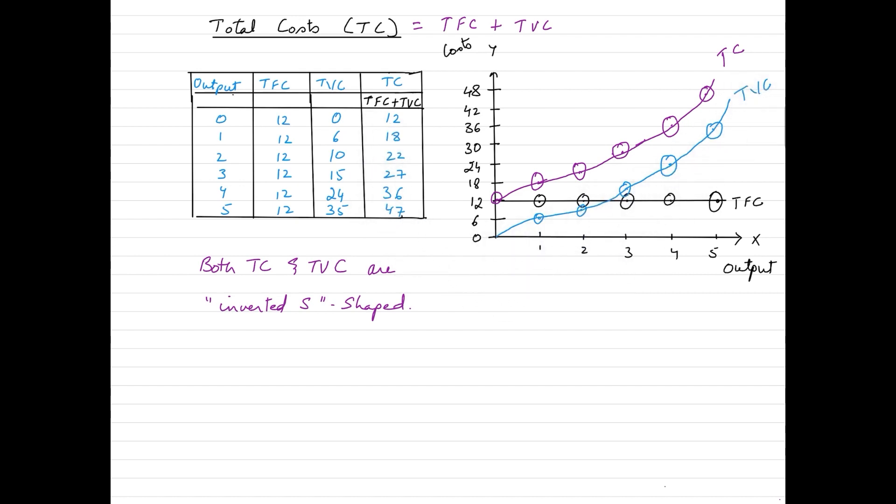When we look at the rate of increase, we need to compare the difference between these two. From 0 to 6, the difference is 6. From 6 to 10, the difference is 4. From 10 to 15, the difference is 5. From 15 to 24, the difference is 9. And from 24 to 35, the difference is 11. If you observe the trend here,